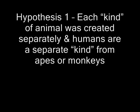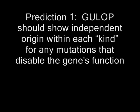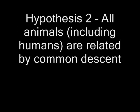Hypothesis one: Each kind of animal was created separately and humans are a separate kind from apes or monkeys. A prediction for hypothesis one: GULOP should follow a pattern of independent origin within each kind for any mutations that disable the function of a gene. Shared mutations between kinds should only occur rarely, if at all.